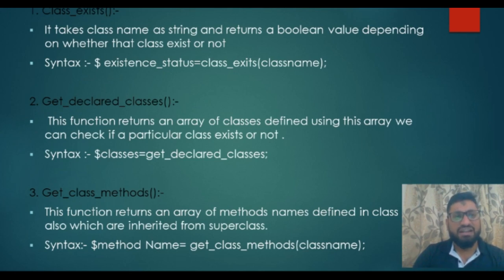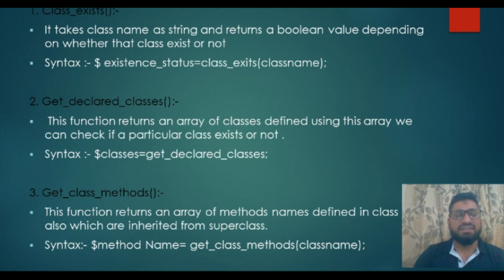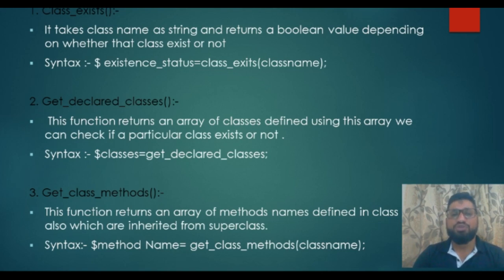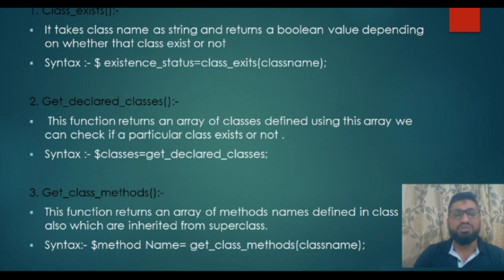The first one is class_exists. It takes a class name as a string and returns a boolean value depending on whether that class exists or not. The syntax is: $existence_status = class_exists('class_name'). This function is useful when we have multiple classes — for example, 100 classes — and we want to check whether a particular class exists. If the class is present, it will return true; if not, it will return false.